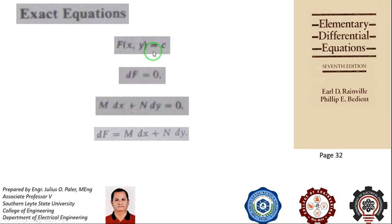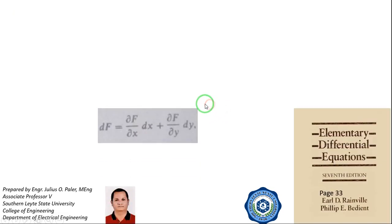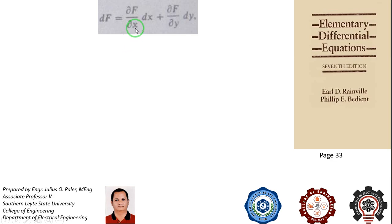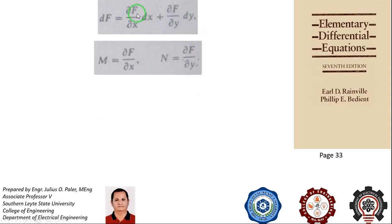I hope you now have an understanding of what an exact differential equation is. Going back to the mdx + ndy form, the differential of f equals the partial derivative of f with respect to x times dx, plus the partial derivative of f with respect to y times dy. It follows that the partial derivative of f with respect to x is our M, and the partial derivative of f with respect to y is our N.